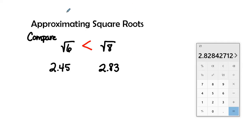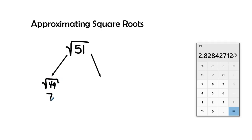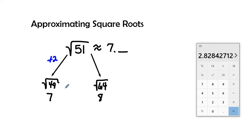Our last example is the square root of 51. We need to find what two perfect squares it falls between. The square root of 49 equals 7 (since 7 times 7 is 49), and the next perfect square is 8 times 8, which is 64. So the approximate value is 7-point-something. The distance from 49 to 51 is 2, and the distance from 49 to 64 is 15.